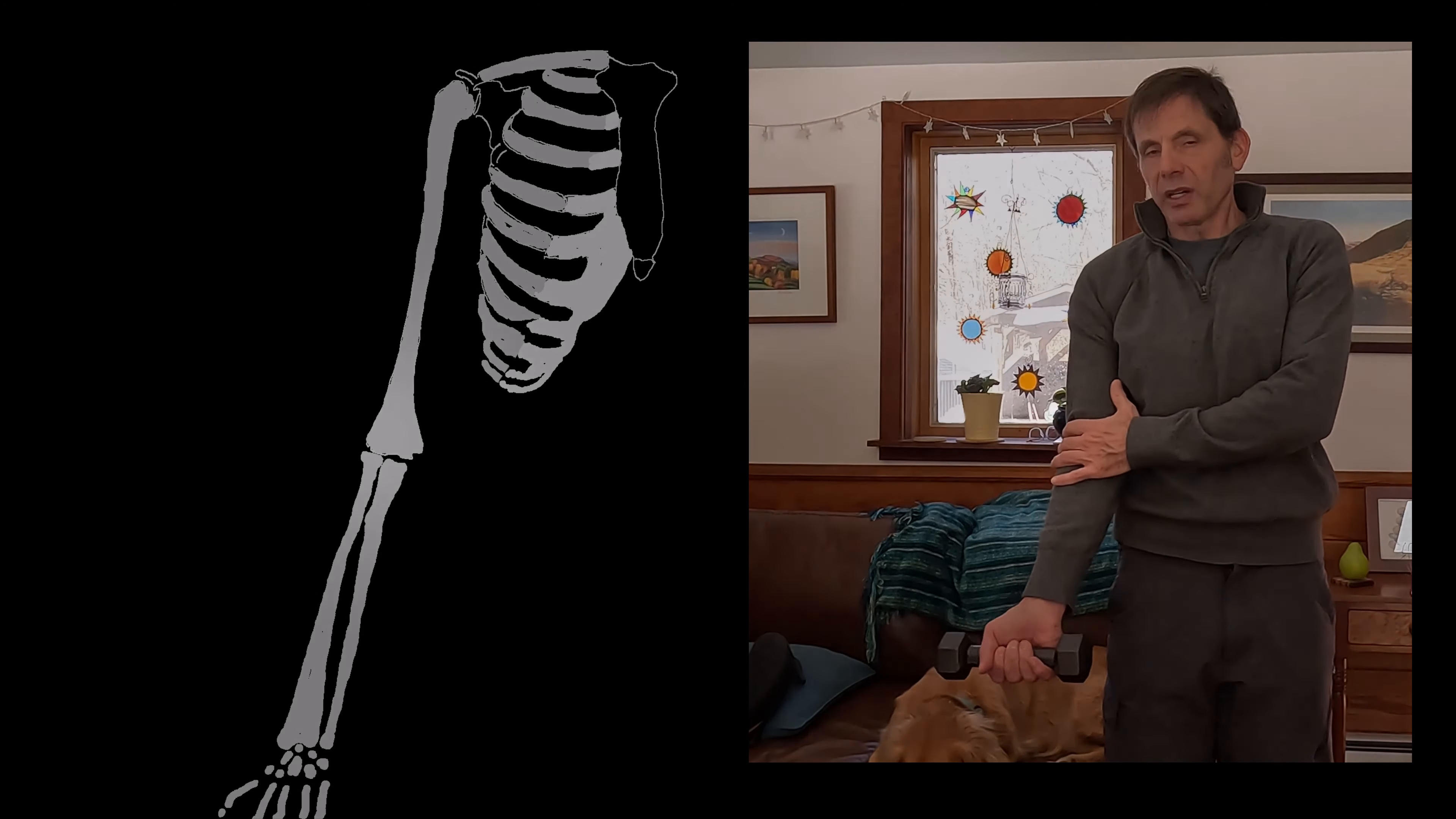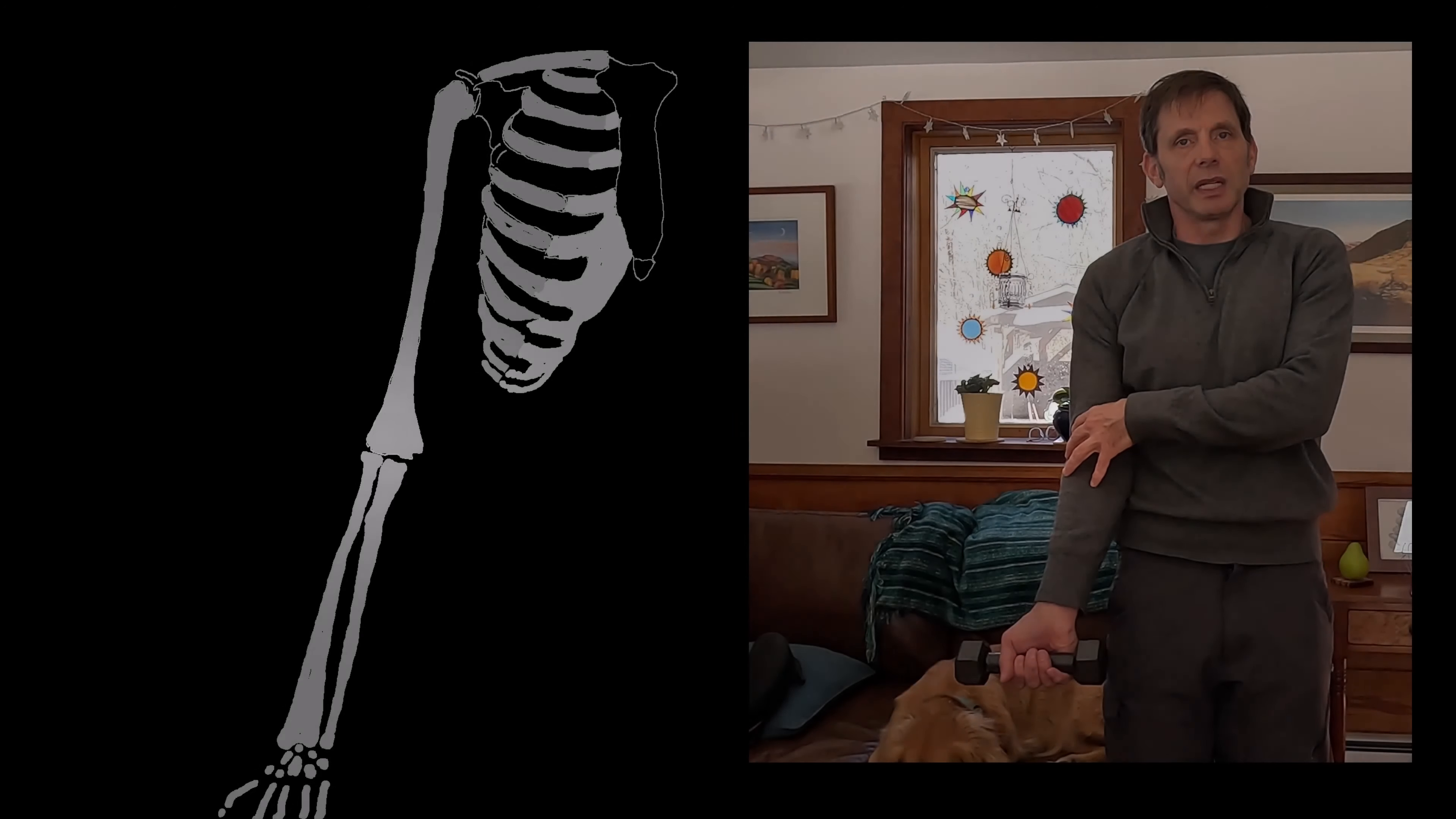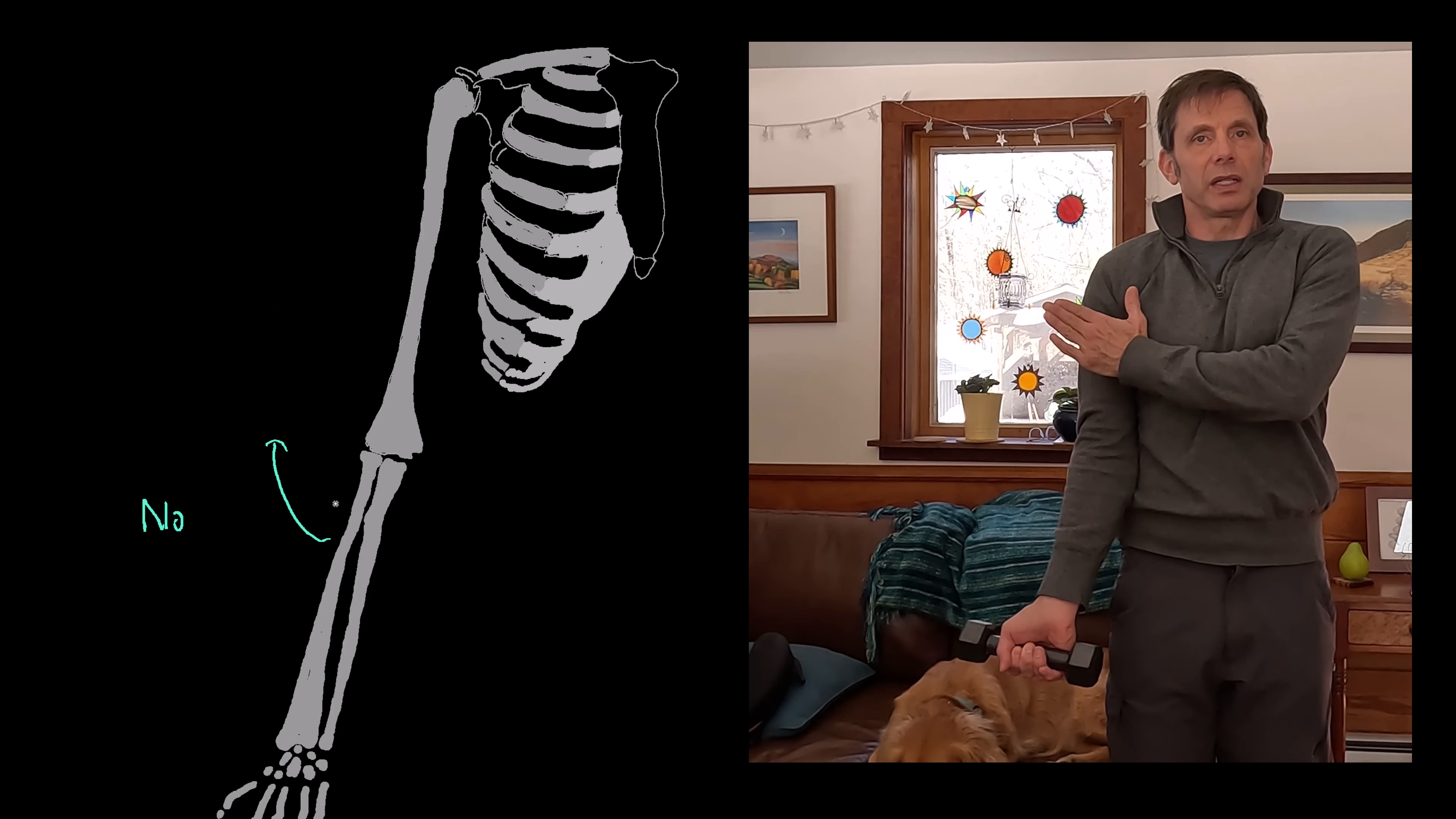Now, I can also actively extend the elbow. In this case, I relax the brachialis and use a muscle with an origin and insertion on the opposite side of the bone. This would be the triceps brachii.